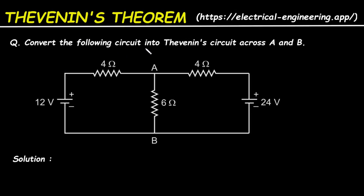Question: Convert the following circuit into Thevenin's circuit across A and B. For this circuit, we have to find its Thevenin's equivalent circuit between terminal A and B.